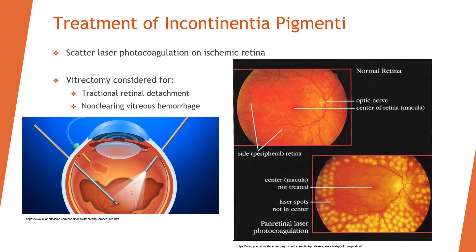Treatment of incontinentia pigmenti includes scattered laser photocoagulation on the ischemic retina to prevent the progression of retinal neovascularization. Vitrectomy is also considered for any tractional retinal detachment, addressing the root of the problem. If there is non-clearing vitreous hemorrhage obstructing the path of light, vitrectomy would be opted for as well.